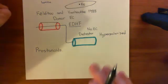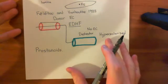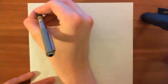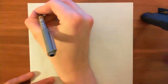We will begin with what arachidonic acid is. Prostanoids are synthesized from arachidonic acid, so we need to start with what arachidonic acid is.